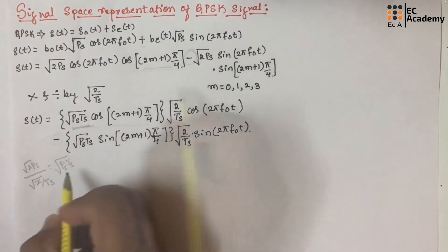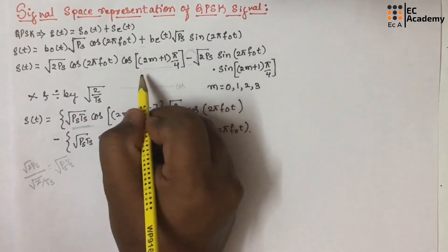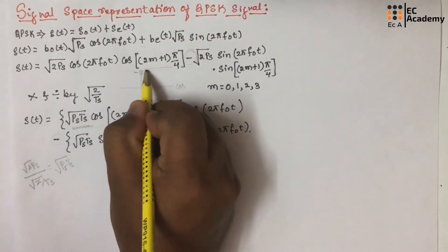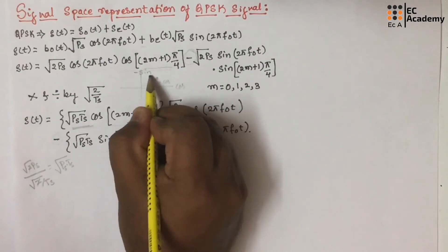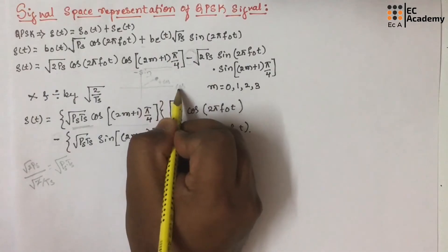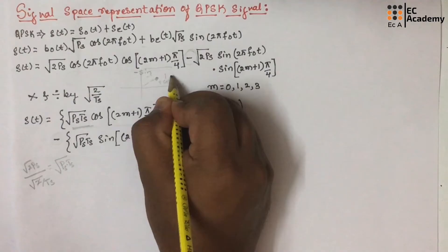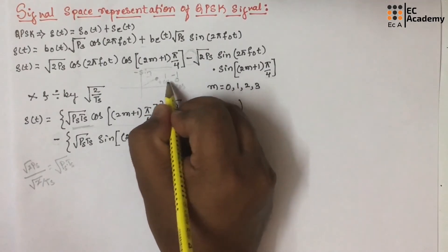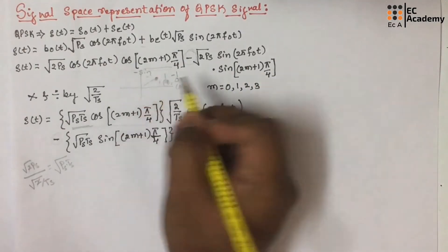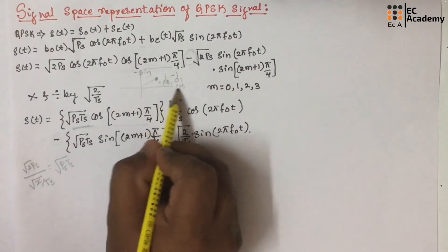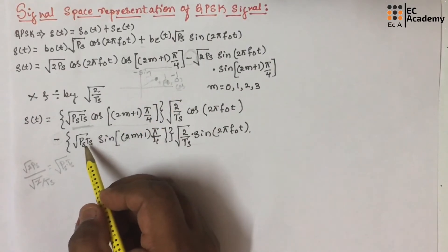If you remember the phasor diagram, here we had cosine and a minus sign. In between, we had a point representing plus cosine and minus sine, which is nothing but (1, −1). So minus 1 corresponds to bit 0 and 1 corresponds to bit 1, giving the bit pattern (1, 0). That is why in both equations we have the negative sign.